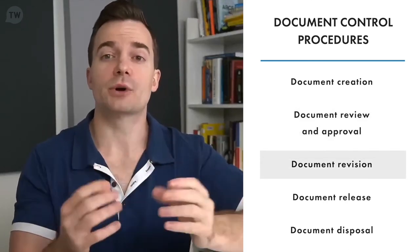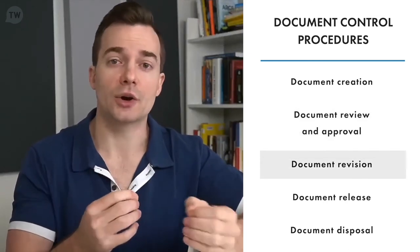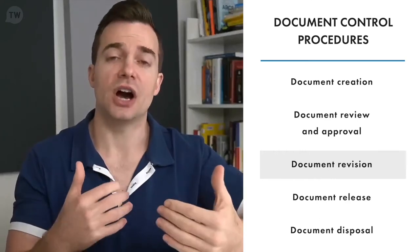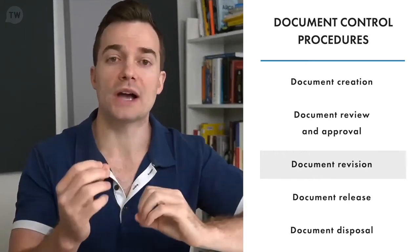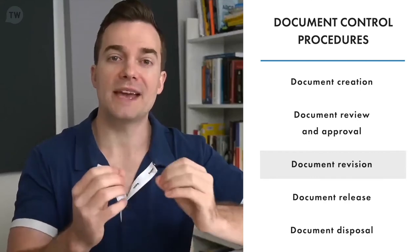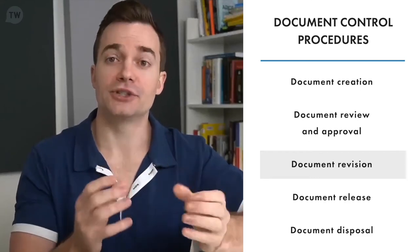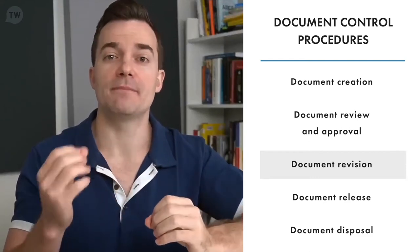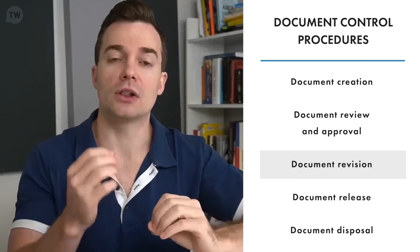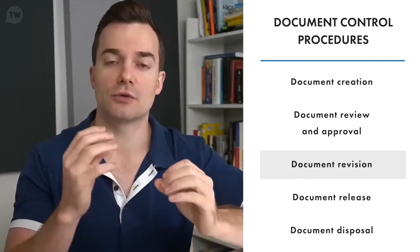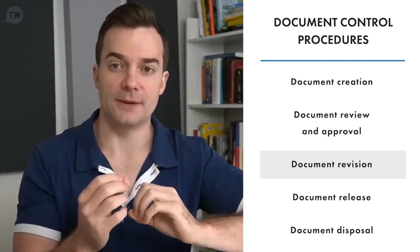Document revision — for documents that require revision on a periodic or as-needed basis, the document revision procedure defines who can initiate or request revisions and who makes the actual revisions. The procedure also includes a method for recording version control information, such as document owner, revision number, and chronological details like date of current revision and next review date.